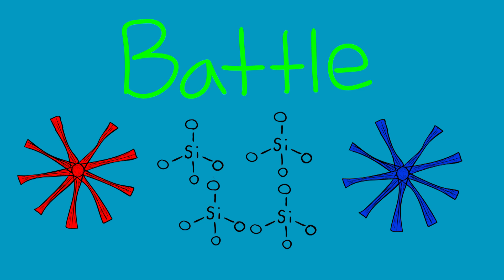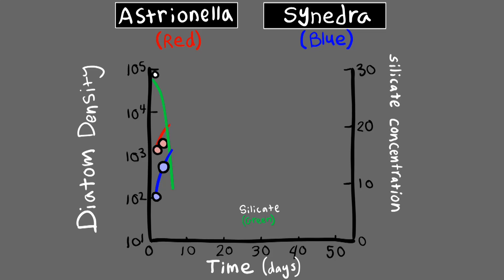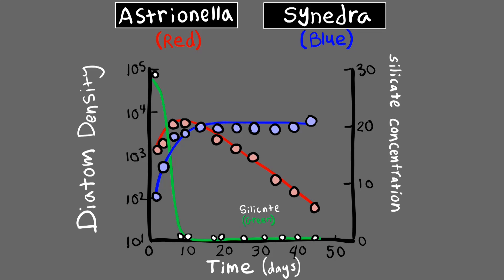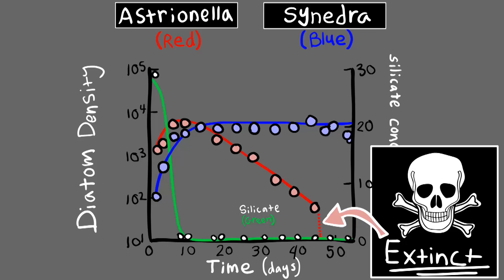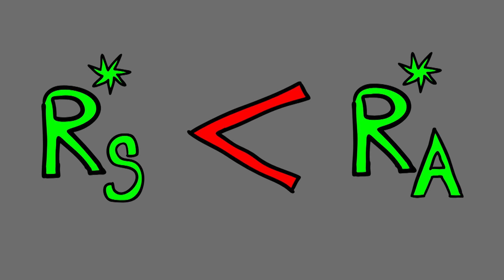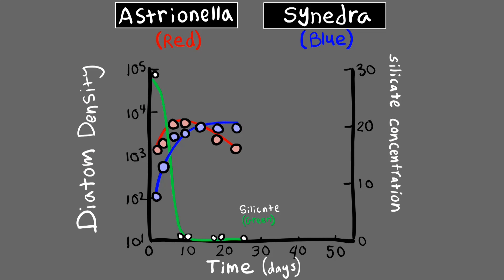Tilman and colleagues found that Synedra uses silicate just a bit more efficiently than Asterionella, so R* S is less than R* A. In the competition experiment, silicate levels start off high, so both species do well. Then the silicate level drops almost exactly to the level set by Synedra alone — R* S. Soon after, Asterionella decreases in abundance until it goes extinct. Once Synedra hits its equilibrium with silicate concentration, there is no longer enough silicate to sustain the Asterionella population, so Asterionella slowly goes extinct.